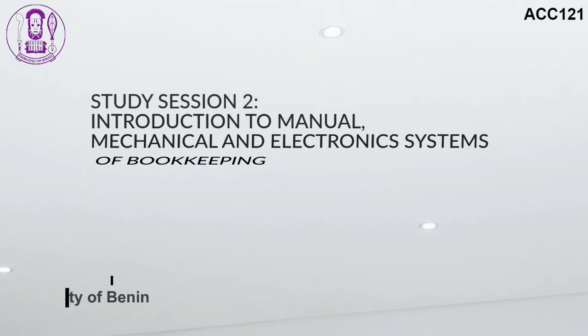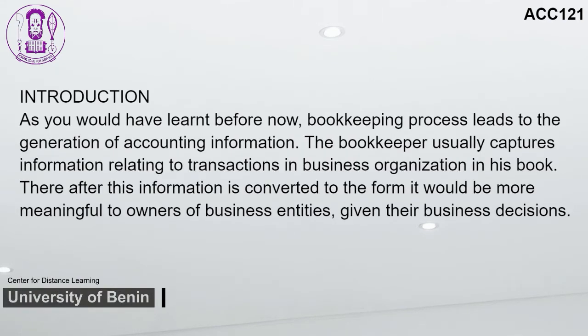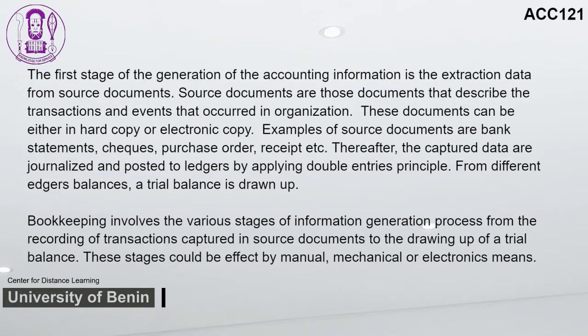Study Session 2: Introduction to Manual, Mechanical, and Electronic Systems of Bookkeeping. As you would have learned, the bookkeeping process leads to the generation of accounting information. The bookkeeper captures information relating to transactions in business organizations. Thereafter, this information is converted to a form meaningful to owners of business entities for their business decisions. The first stage of generating accounting information is the extraction of data from source documents.